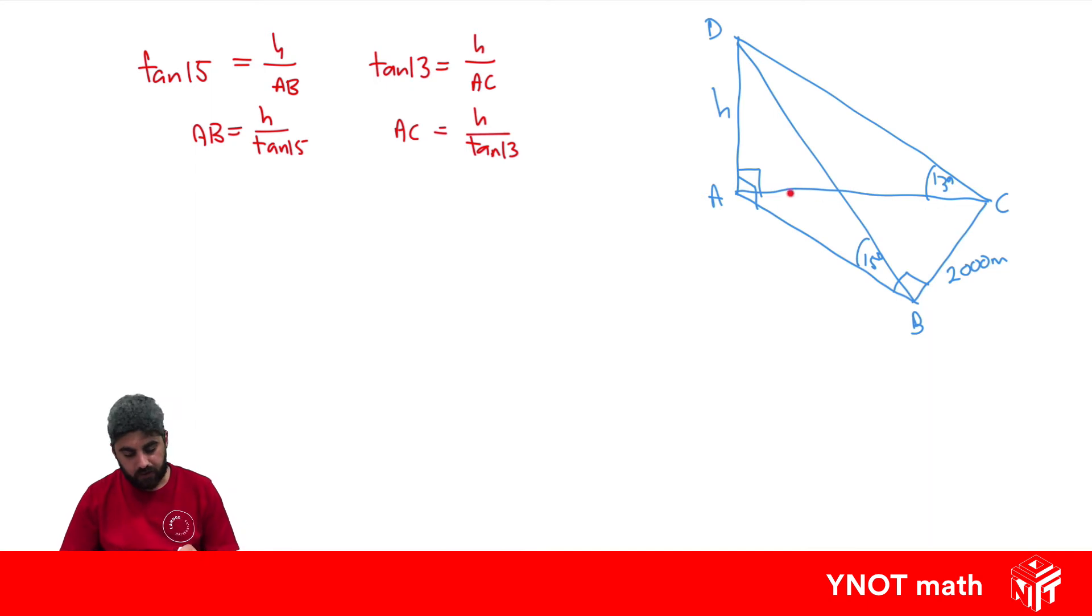Now in the triangle on the bottom here we can apply Pythagoras. If we write an equation for Pythagoras we'll get AC squared equals AB squared plus 2000 squared because our right angle is here in this triangle so that's the hypotenuse. And we have expressions for AB and AC now which we can substitute into our Pythagoras equation.